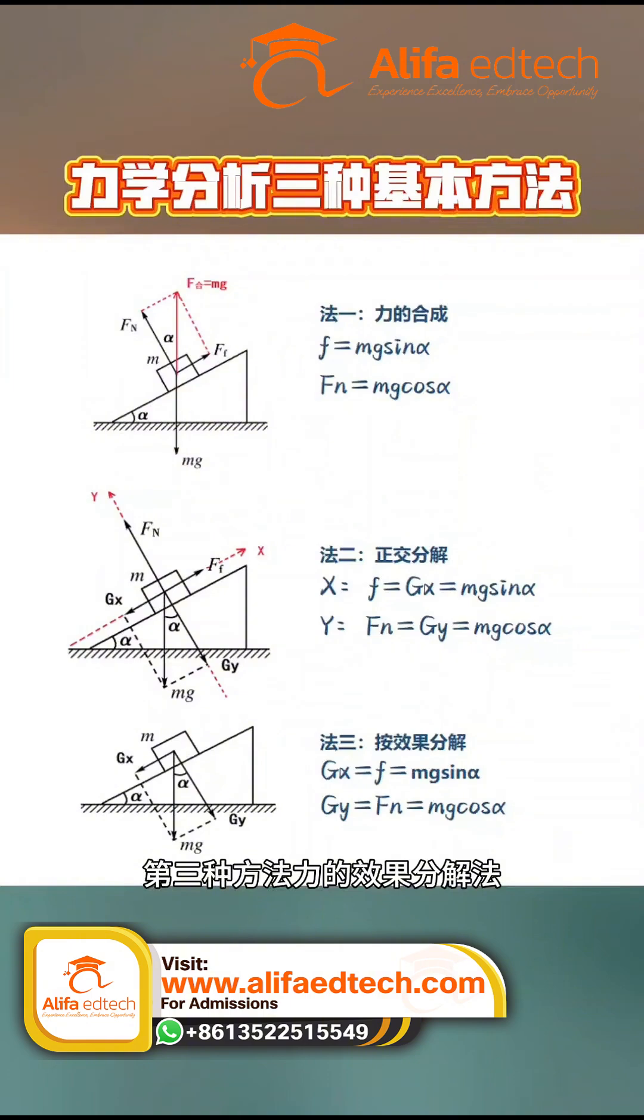The third method is resolving a force by its effects. The key here is to resolve the force of gravity according to its effects. Gravity has two effects. First, it acts down the inclined plane, giving the object a tendency to slide down. Second, it acts perpendicularly into the inclined plane, pressing against it. We resolve gravity into a component gx down the incline and a component gy perpendicular to the incline.